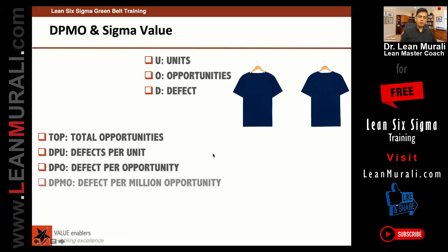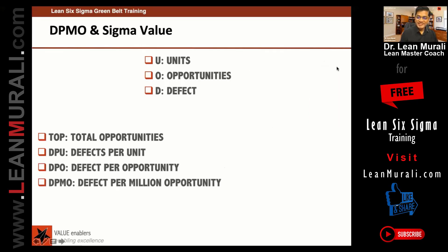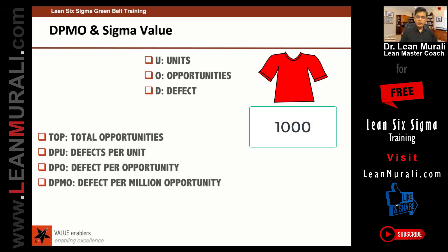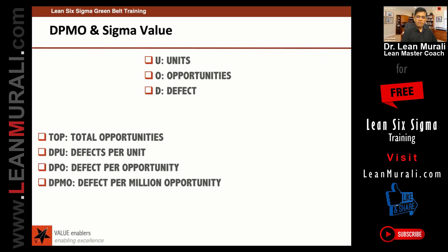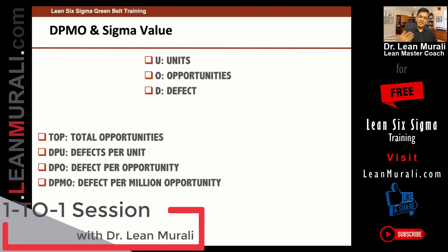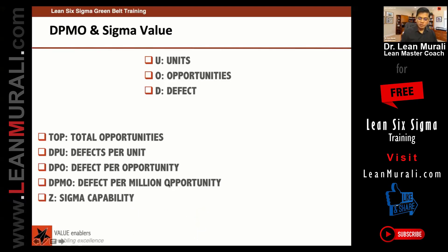We will also calculate defect per opportunity and defects per million opportunities (DPMO). The million is added just to magnify the number. For example, with 1000 shirts and two specifications (size and color), there are 2000 total opportunities. If there are two defects, DPO is 2 divided by 2000, which gives a very small fraction like 0.0001. So companies multiply by one million to get DPMO.